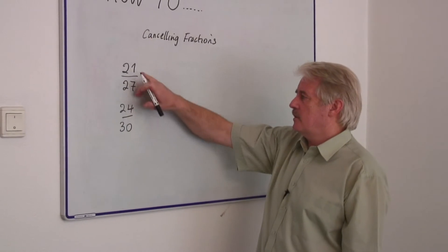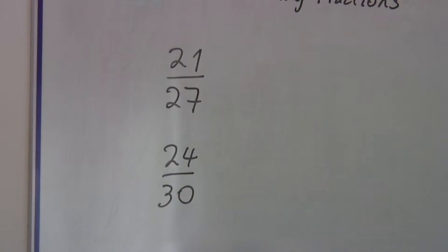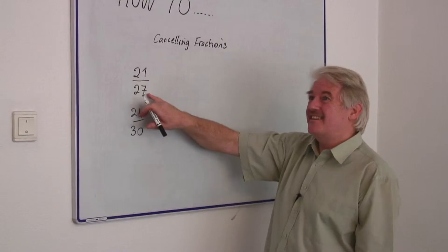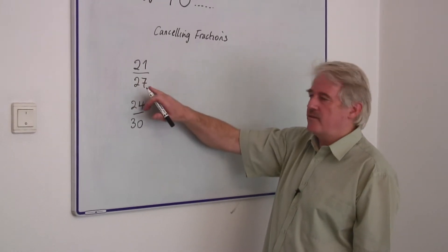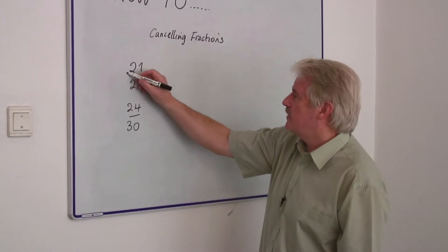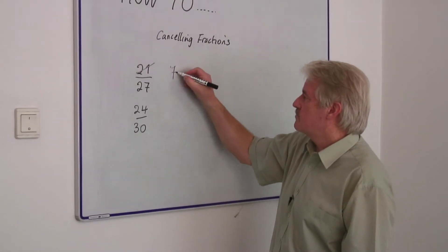If you look at the top and bottom here, two plus one is three and three divides by three. Two plus seven is nine. Nine divides by three. It means both of these numbers divide by three. So if I divide this one by three, twenty-one divided by three gives me seven.